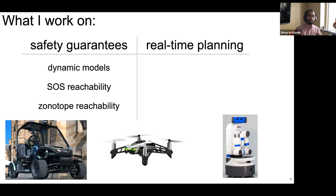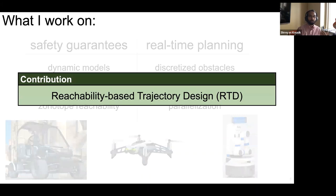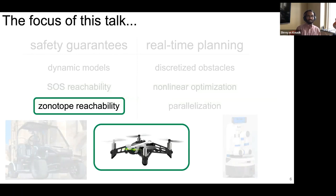To enable safety guarantees, I've spent a lot of time thinking about choosing the right dynamic models to represent the robots, and then using sums-of-squares or zonotope reachability analysis to generate constraints for real-time safe planning. To enable these constraints to be used in real-time, I've spent time thinking about the right way to represent obstacles and different ways to solve a nonlinear trajectory optimization program at runtime. The umbrella under which all of this falls is called reachability-based trajectory design, or RTD, which I've been developing over the past five years of my PhD.